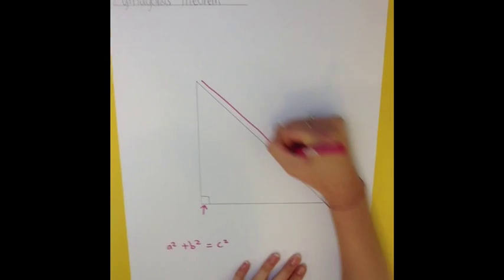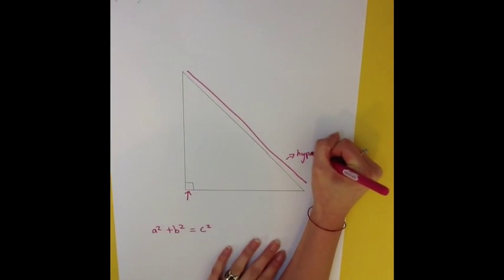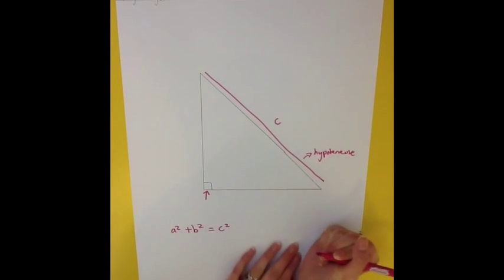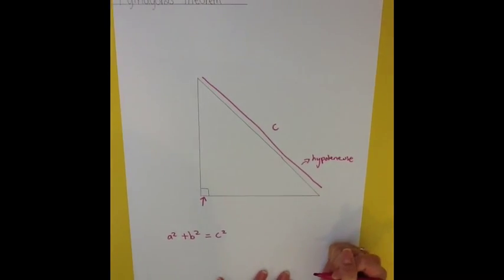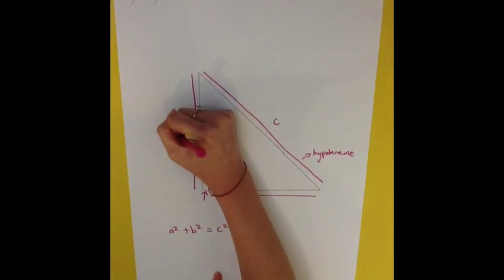The longest side of the triangle is the hypotenuse, and we always label this c. To remember this, c is always opposite the right angle. Then you can label the other sides a and b.